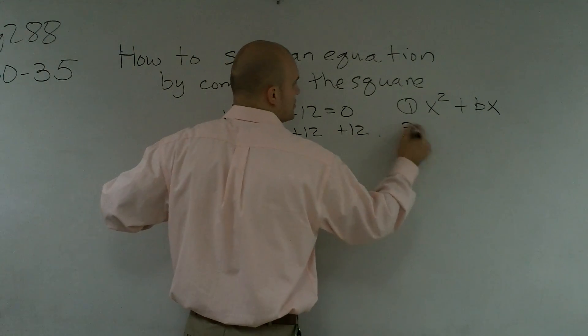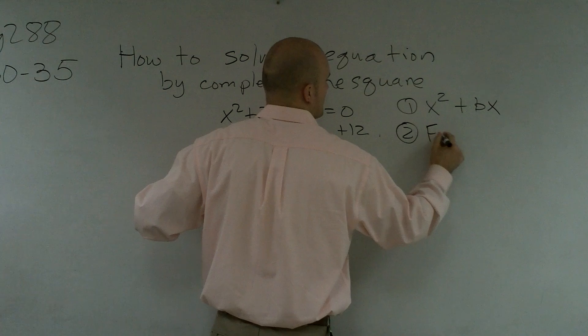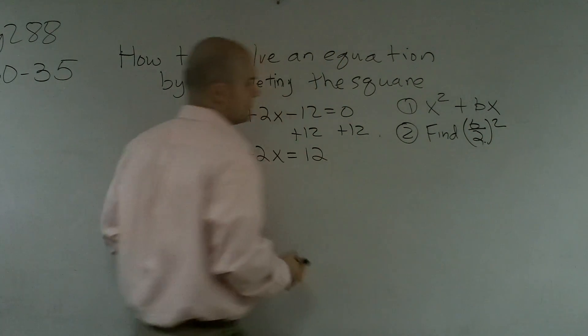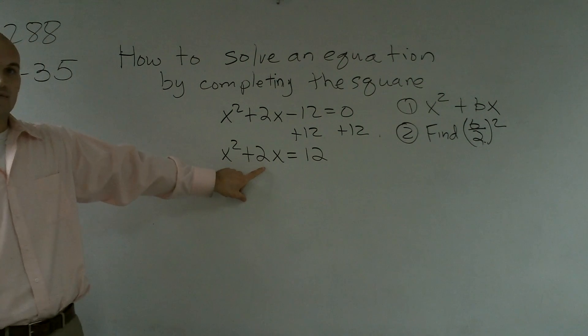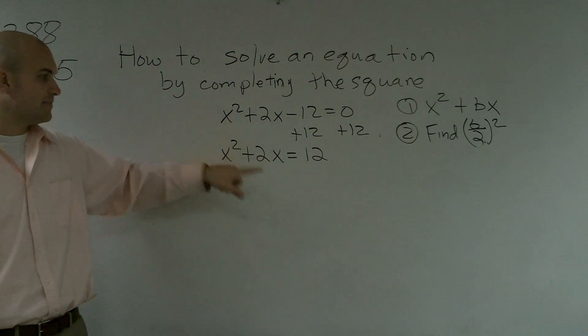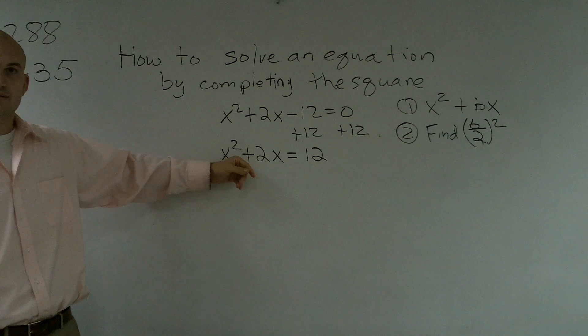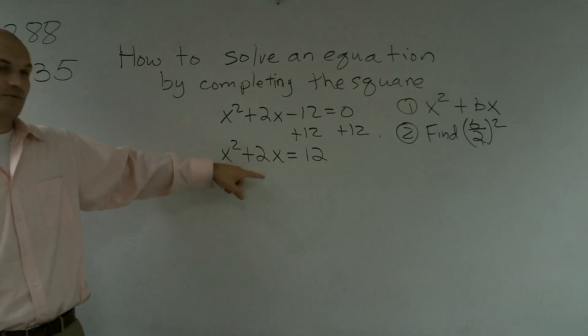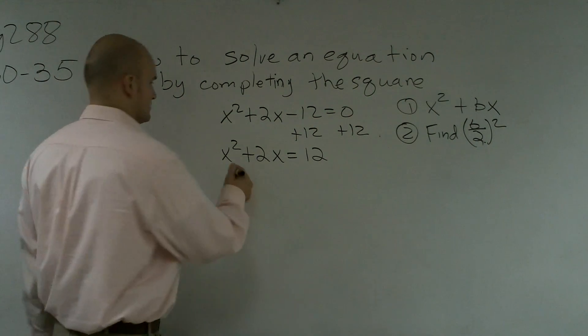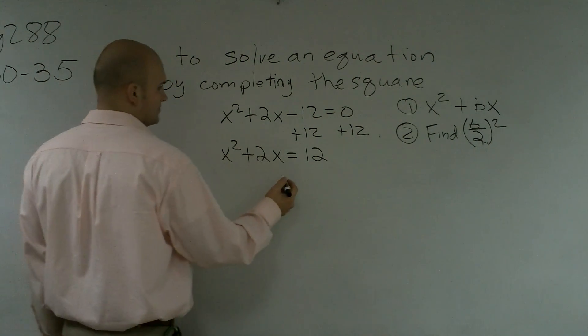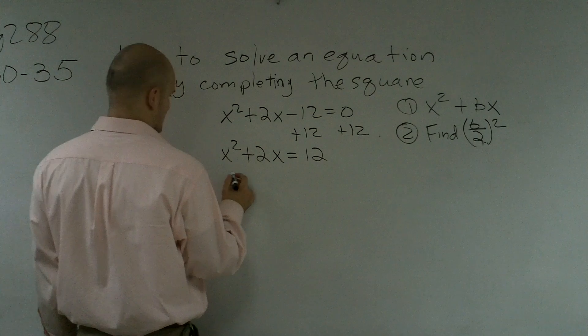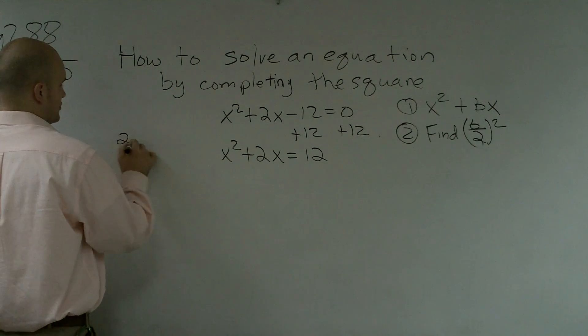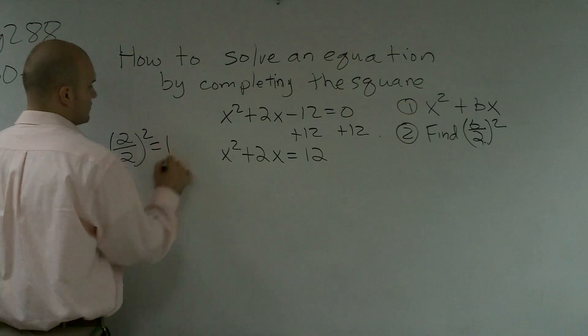All right, so now the next step, step 2, is to find b over 2 squared. So we know our b is going to be 2, so we're going to divide by 2, which is 1, and then squared. So b divided by 2 is going to be 1, and then 1 squared is 1. So therefore, I'll just write over here: 2 divided by 2 squared equals 1.